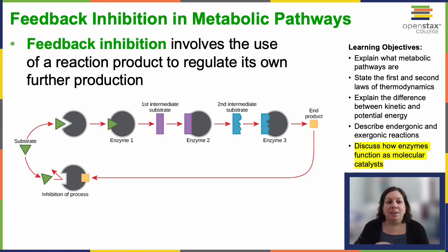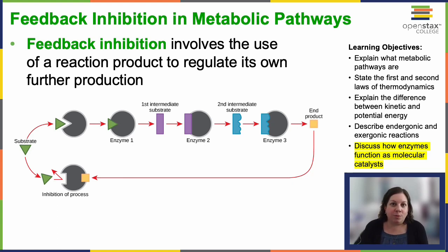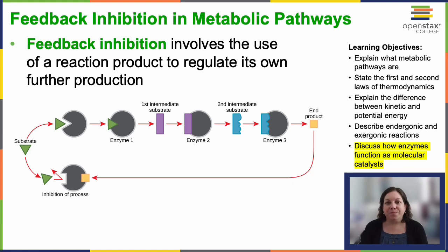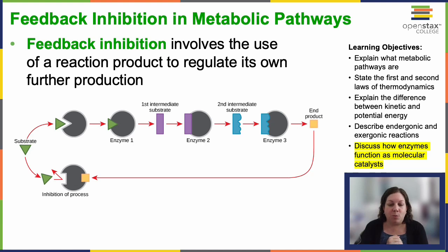Feedback inhibition is employed in the control of amino acid and nucleotide production. For example, when a cell is getting ready to divide it needs more of these molecules, so it produces more. Once they reach a certain level, the concentration of that amino acid present in the cell causes production to stop — it signals that enough has been made.